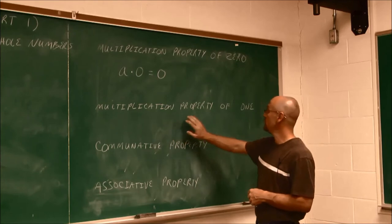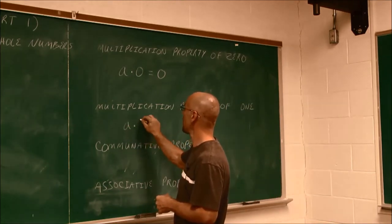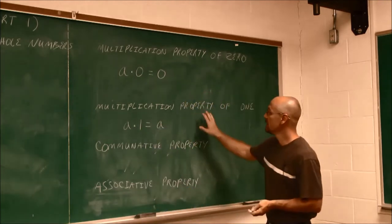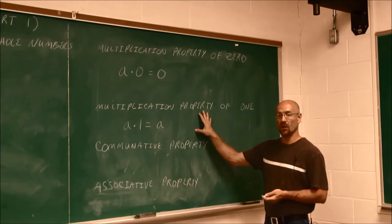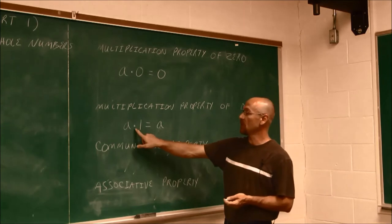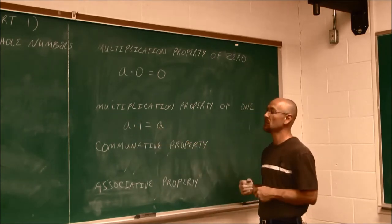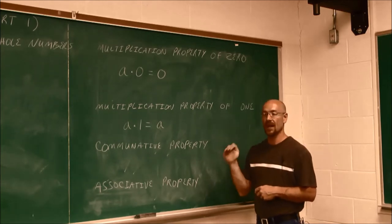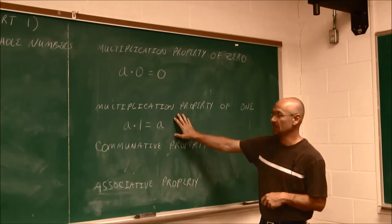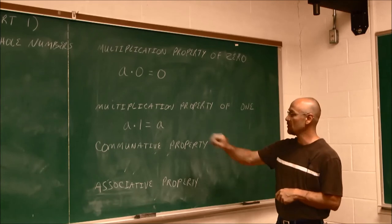The next one is the multiplication property of 1. Well, if I have any number and I multiply it by 1, it equals that value. This property is also called the identity property of multiplication, because if I multiply any number by 1, it identifies that number. If you recall when we talked about addition, if we add 0, that was the additive identity. Well, 1 is the multiplicative identity. It identifies this number. If I multiply any number by 1, I've identified that number.